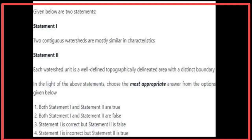Given below are two statements. Statement 1: Two contiguous watersheds are mostly similar in characteristics — Statement 1 is incorrect. Statement 2: Each watershed unit is a well-defined, topographically delineated area with a distinct boundary — Statement 2 is true. The most appropriate answer is the fourth option.